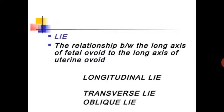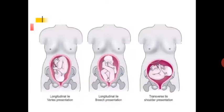So lie means the relationship between the long axis of the fetus and the long axis of the mother's uterus. There are three types: longitudinal lie, transverse lie, and oblique lie.